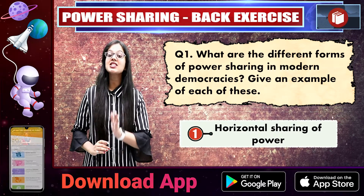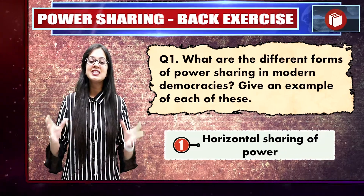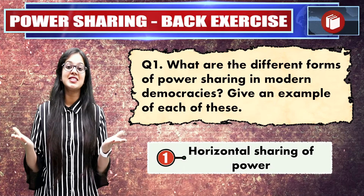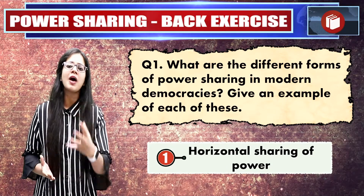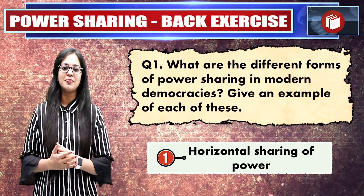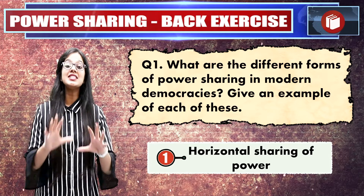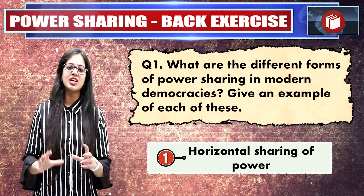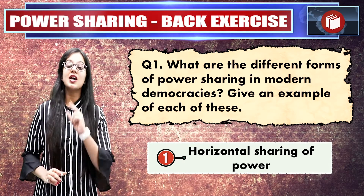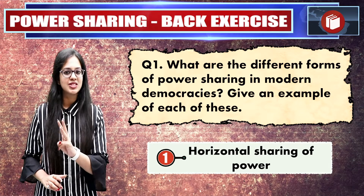The objective of this method is that all the organs of government are placed on the same level, so that no single organ holds all the power. In India's case, power is shared among the Parliament, the Council of Ministers, and the Indian courts.